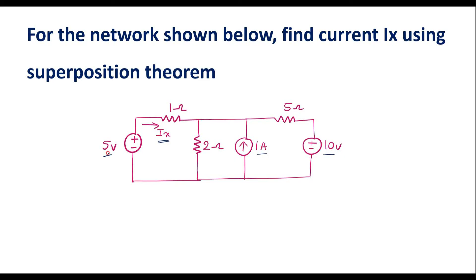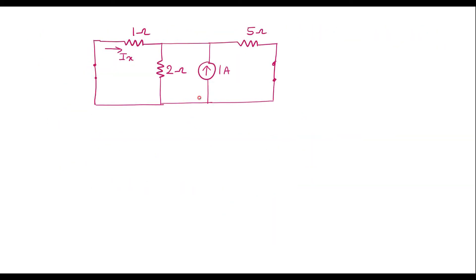Now we are supposed to consider the 1 amp current source alone. In that case, the 5 volt and 10 volt sources will both be short circuited. Let me draw the equivalent circuit considering the 1 amp source alone. Here we are supposed to find the current through the 1 ohm resistor, which I will call Ix3. Here we can see that the 5 ohm and 2 ohm resistors are in parallel.